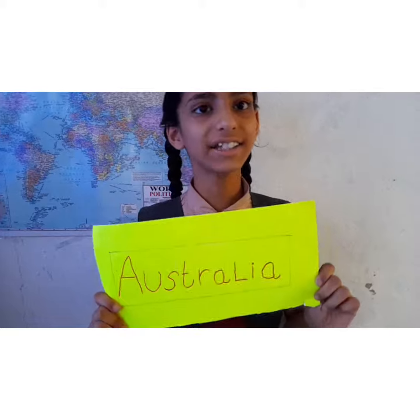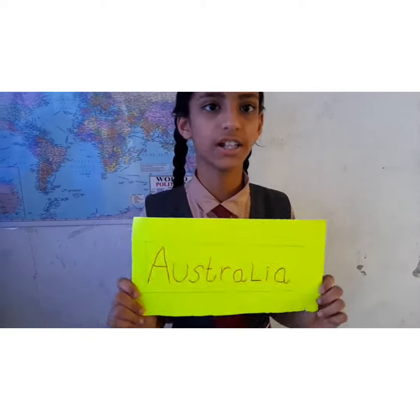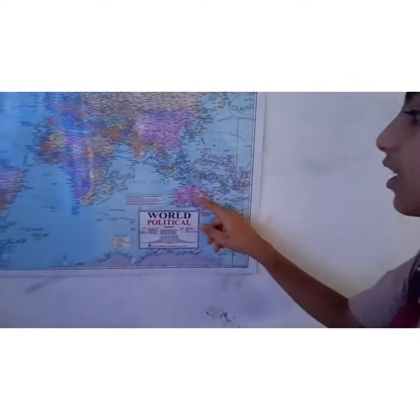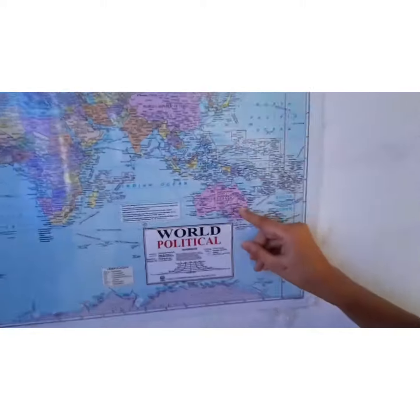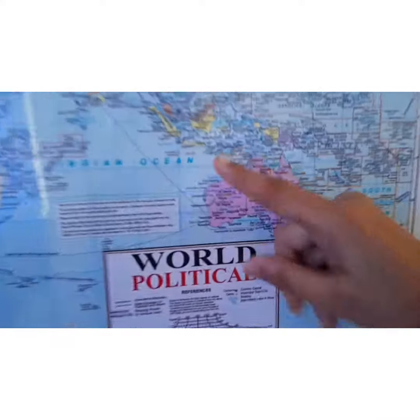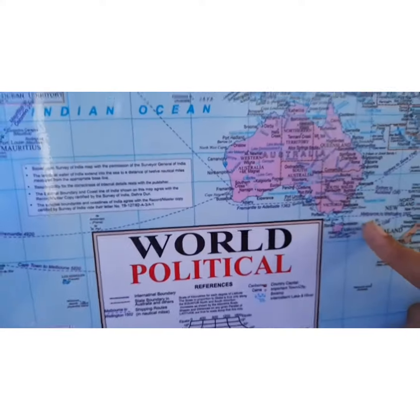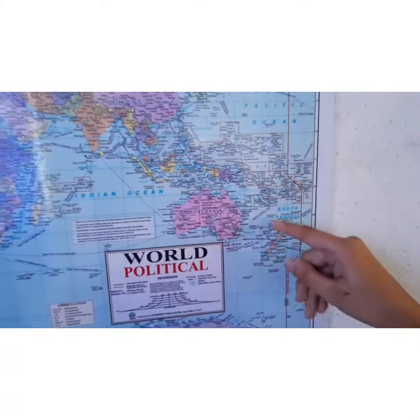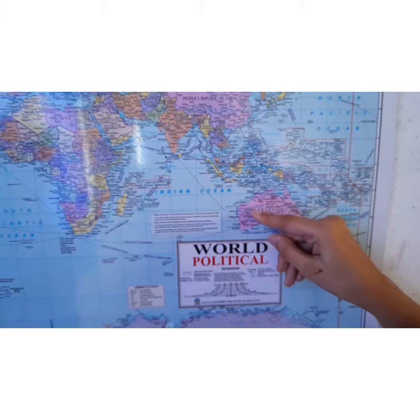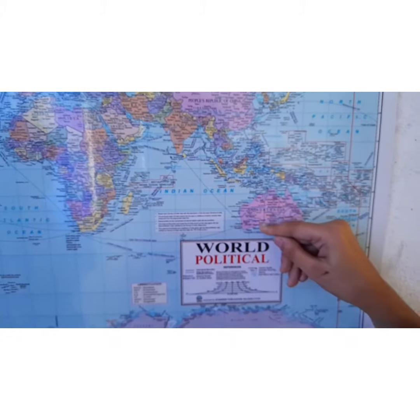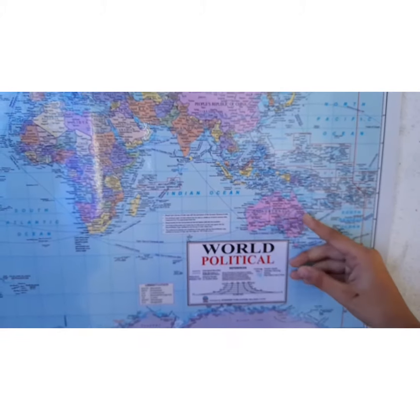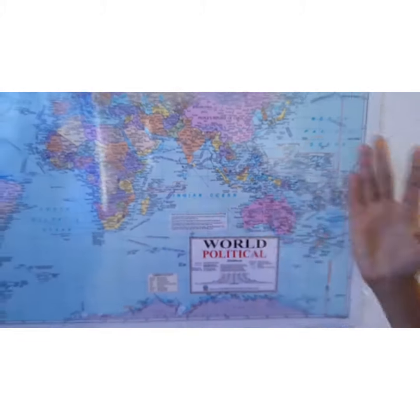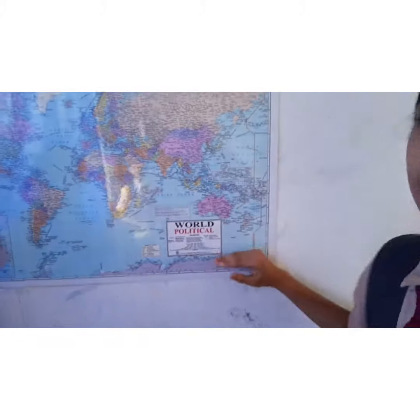Next is Australia. Australia is the smallest continent. It lies entirely in the southern hemisphere. It is surrounded by oceans on all sides, and so it is called an island continent.